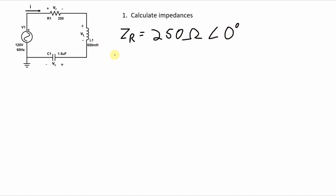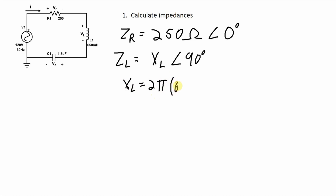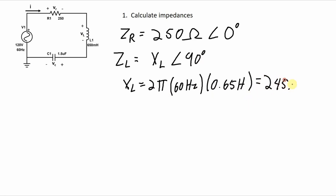For the inductor, that will be equal to the reactance of the inductor with a phase angle of 90 degrees. The reactance of the inductor is equal to 2π times the frequency, which is 60 hertz in this case, times the inductance, which is 0.65 henrys. Multiplying all of this out, I get 245.04 ohms. So the impedance of the inductor is 245.04 ohms with a phase angle of 90 degrees.